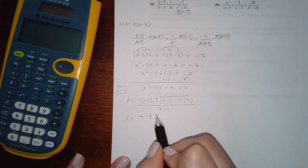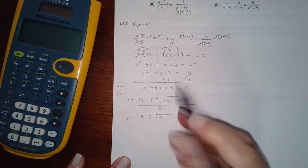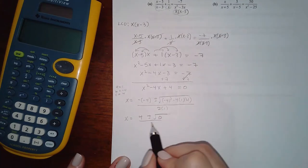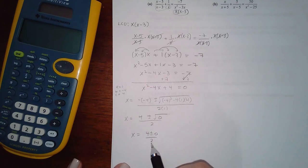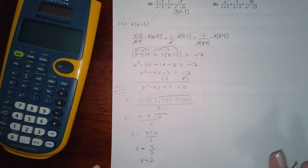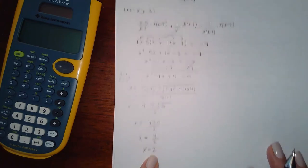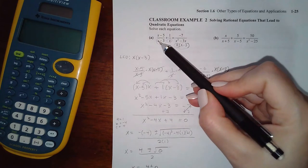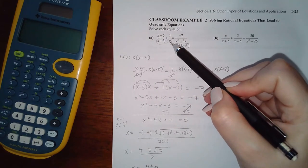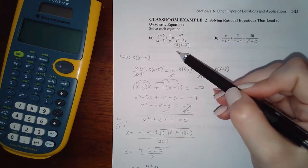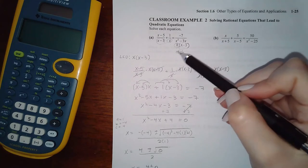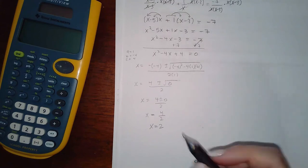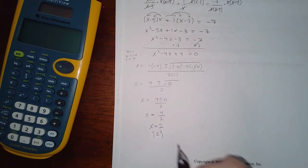The discriminant is 16 - 16 = 0, so we get 4/2 = 2. Does x = 2 make any denominator zero? 2 - 3 ≠ 0, 2 ≠ 0, and 2² - 3(2) = 4 - 6 ≠ 0. It checks out — x = 2 is a valid solution.